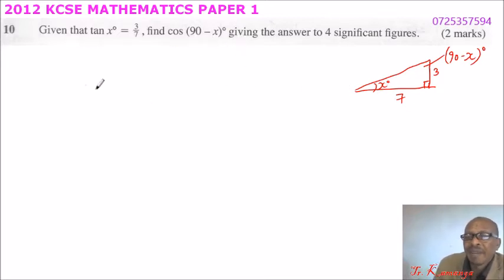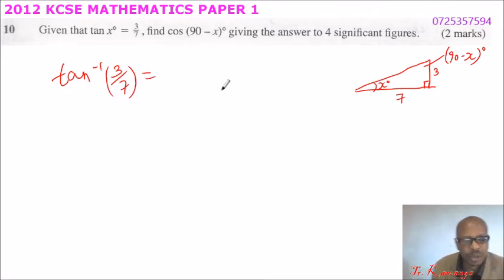So we can find x by saying tan inverse of 3 over 7. That is, to get x, we find tan inverse of 3 over 7. Put the bracket there, then use your calculator to find what x equals. You press the inverse tan sign.